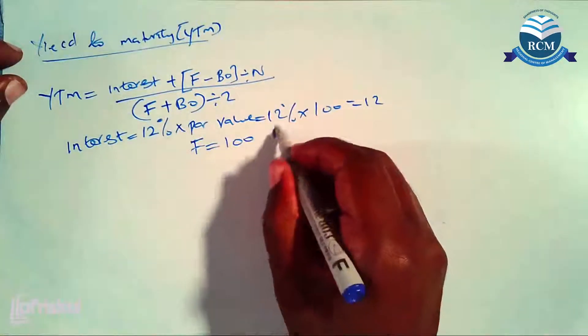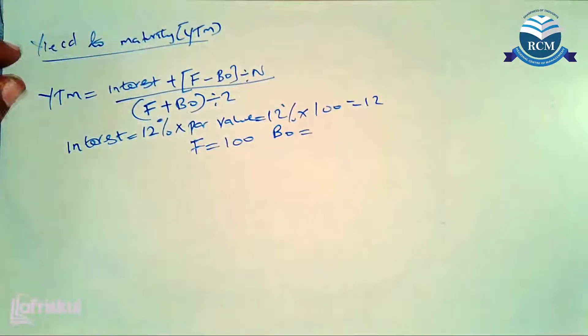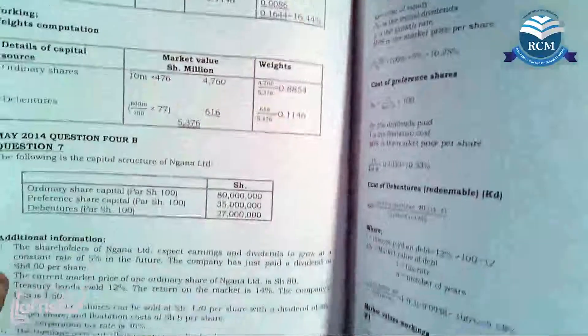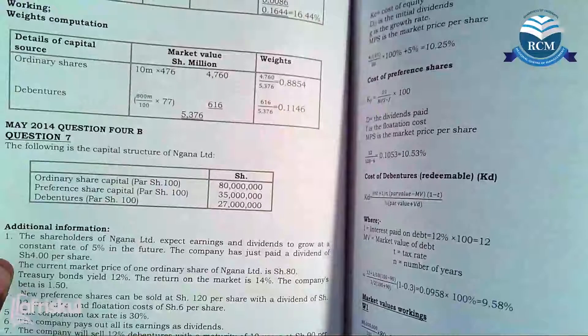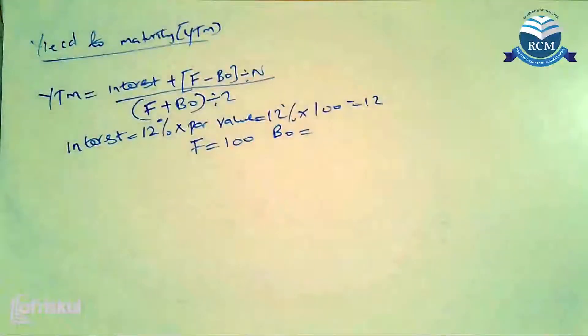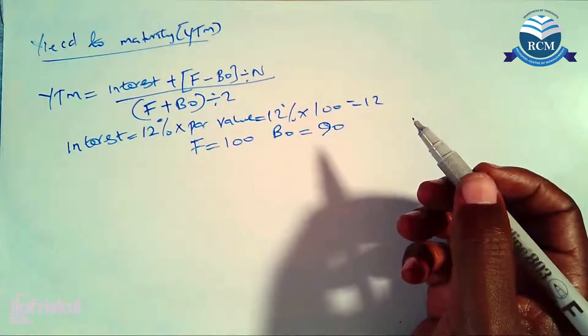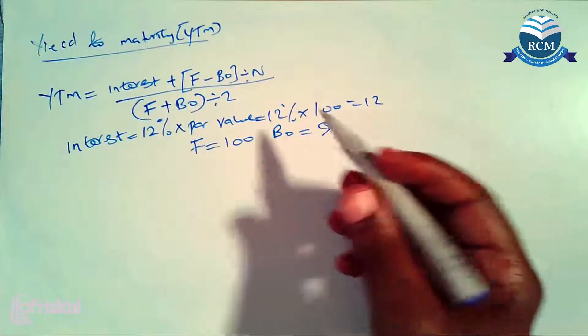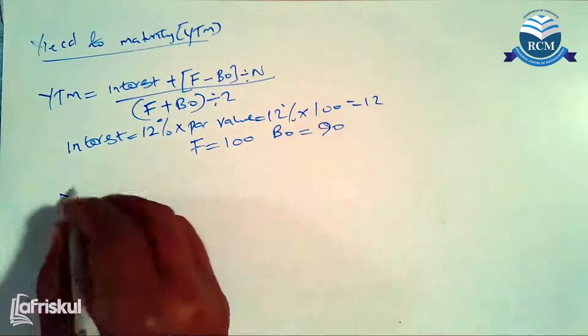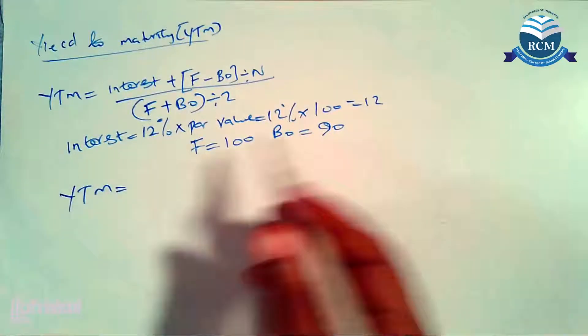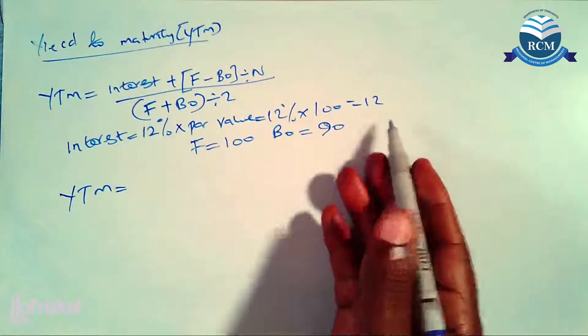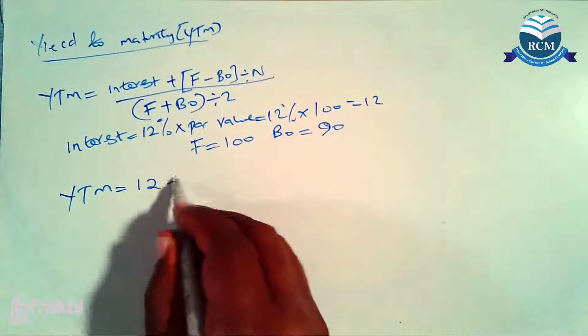And then the market price of the bond—they have told us the market price is 90. Now ladies and gentlemen, having all this we should be able to get yield to maturity very easily. The interest we have here is 12.